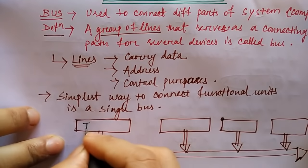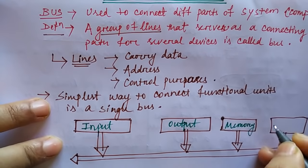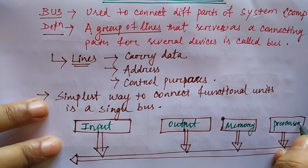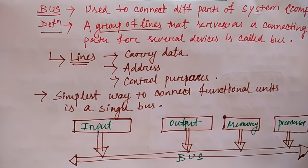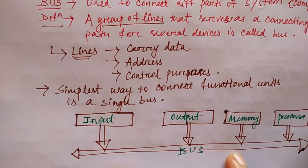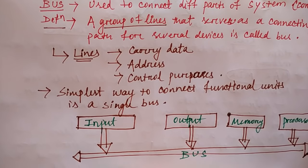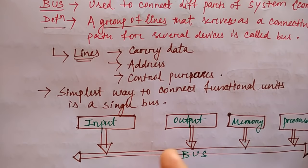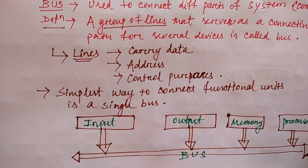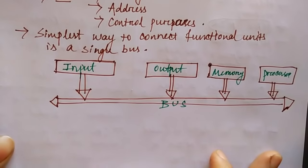Here in the figure: this is my input device, this is my output device, this is my memory, and this is my processor — which looks like a single bus connecting these four functional units. The main purpose is to use the control line. In any system you can also use multiple buses, which is better, but it has a little more cost compared to a single bus.